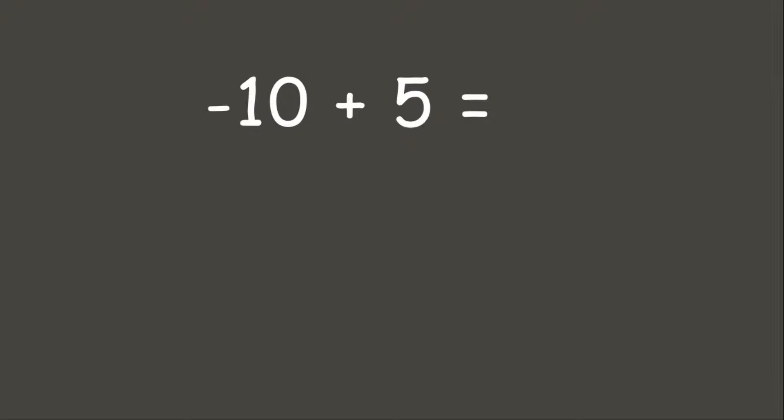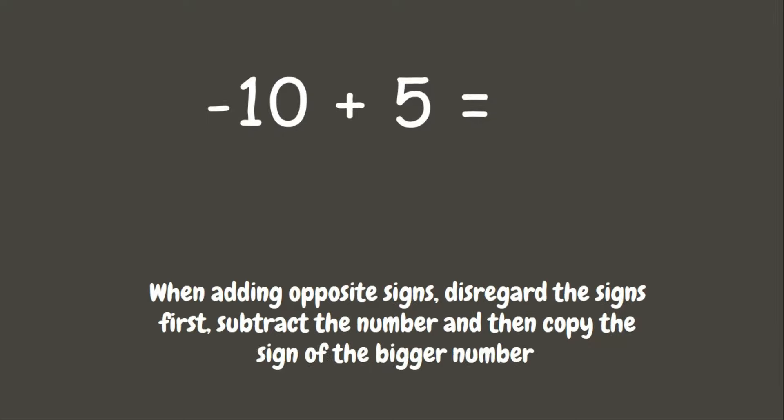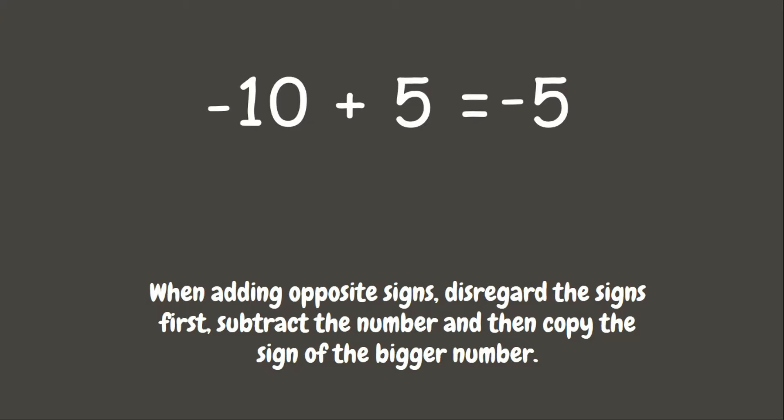Now let us try without number lines or counters. We have negative 10 plus positive 5. When adding opposite signs, first we disregard the signs and subtract the numbers: 10 minus 5 is 5. Then we copy the sign of the bigger number — ignoring signs, the bigger number is 10, which has a negative sign — so our answer is also negative. Therefore, negative 10 plus positive 5 equals negative 5.